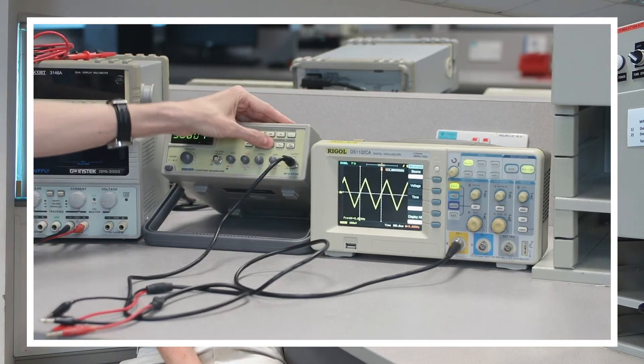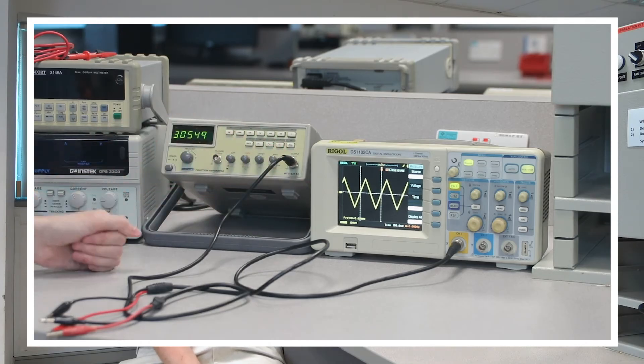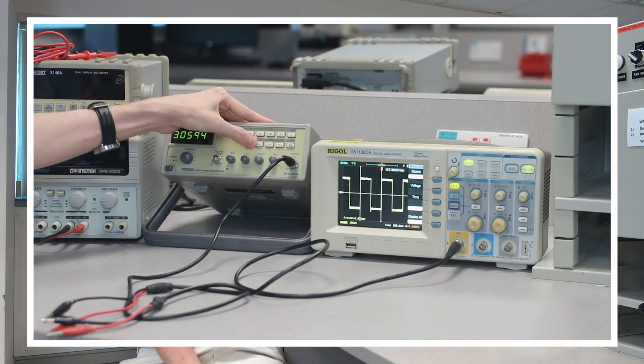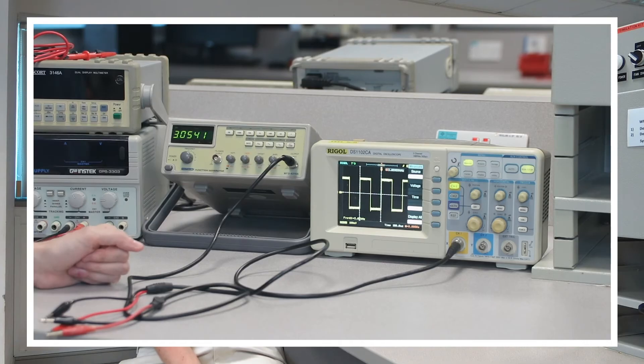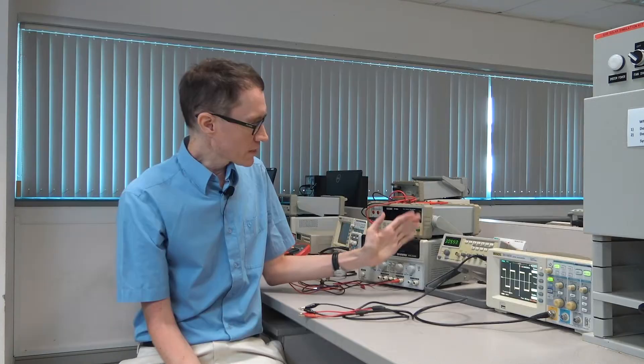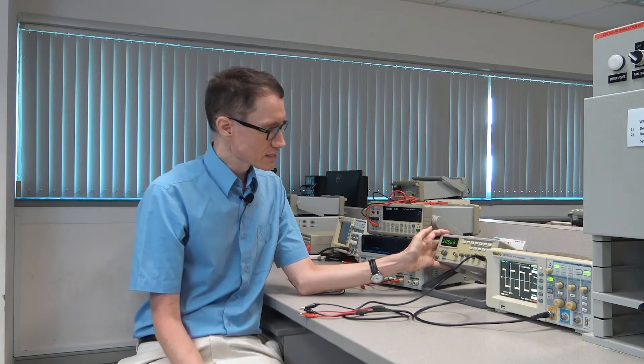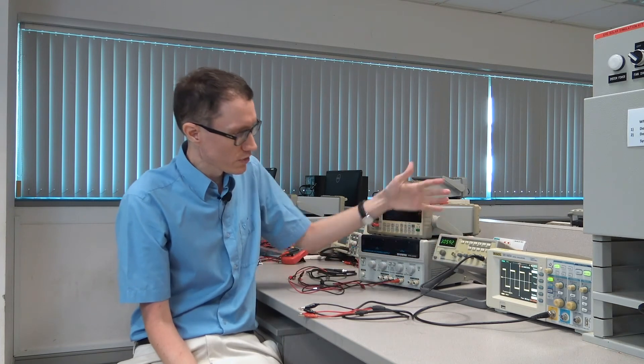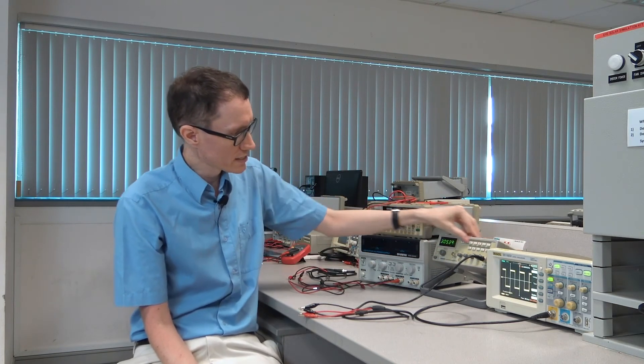If I change to a sawtooth wave, we can see what that would look like on the oscilloscope. If I change it to a square wave, we can see what that would look like as well. The function generator is very easy to understand because it only really has two kinds of buttons on it, shape and frequency.